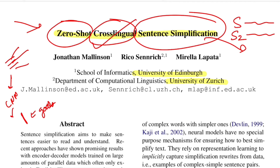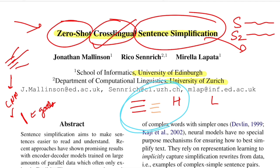Cross-lingual means you're training a model on one language and generalizing it to another. Summing up the full title: we are doing sentence simplification by training a model that generalizes across multiple languages, under the constraint that those different target languages don't have any sentence simplification parallel data — so you train on a high-resource language H and generalize to a low-resource language L where no such parallel corpus exists.